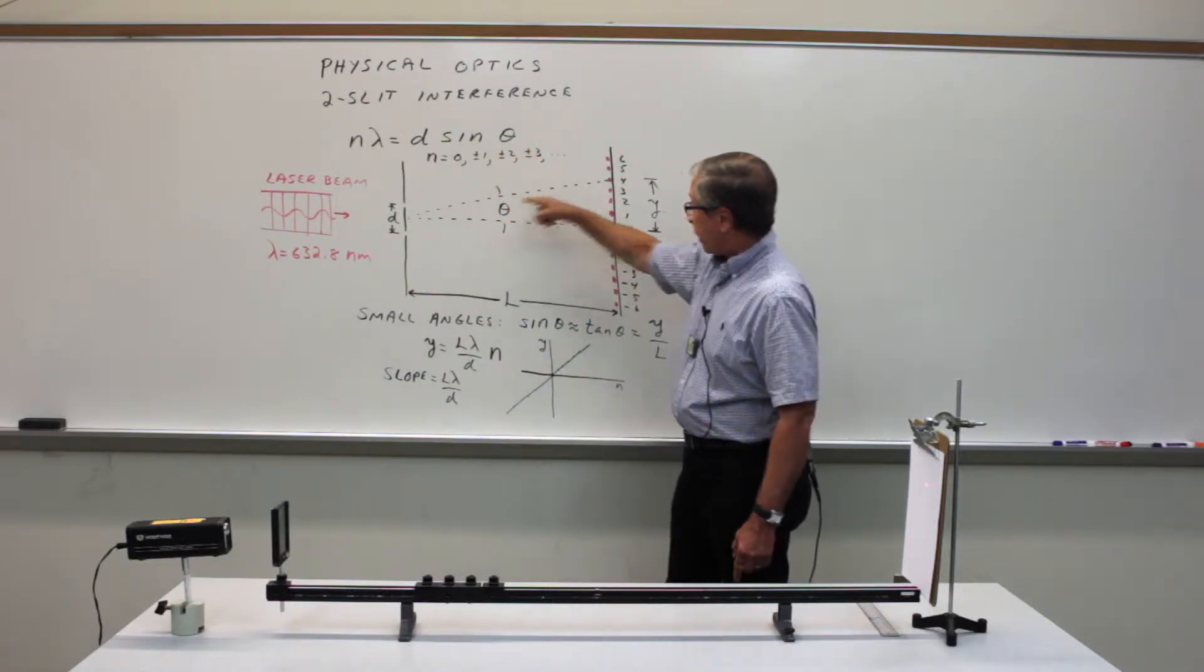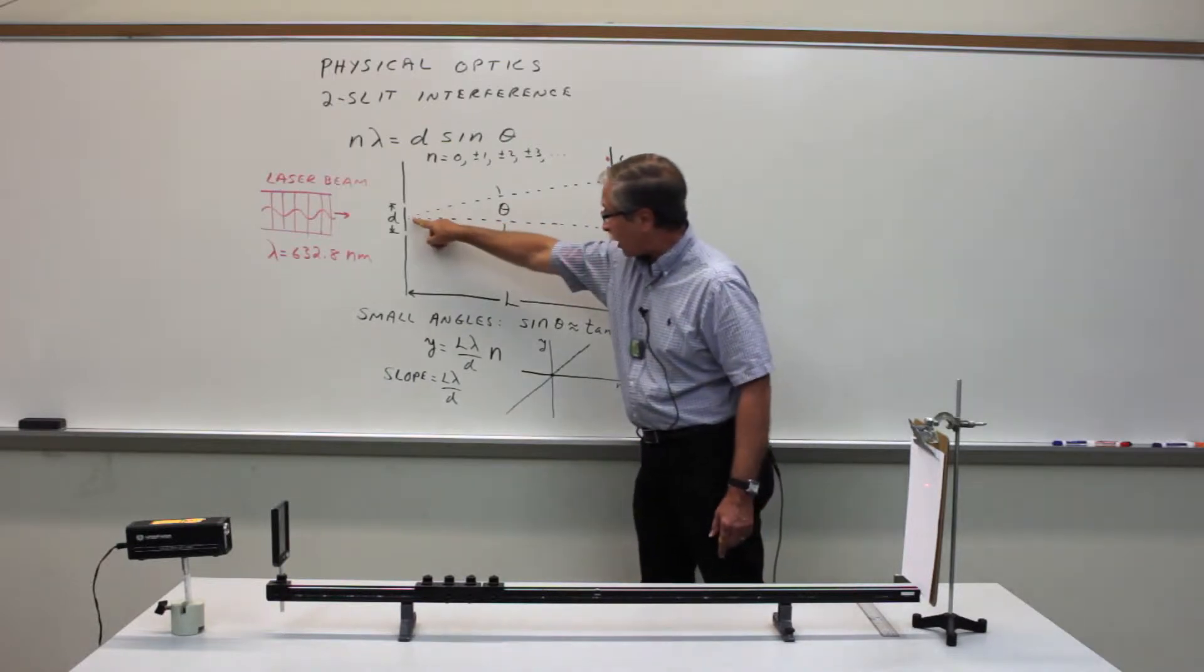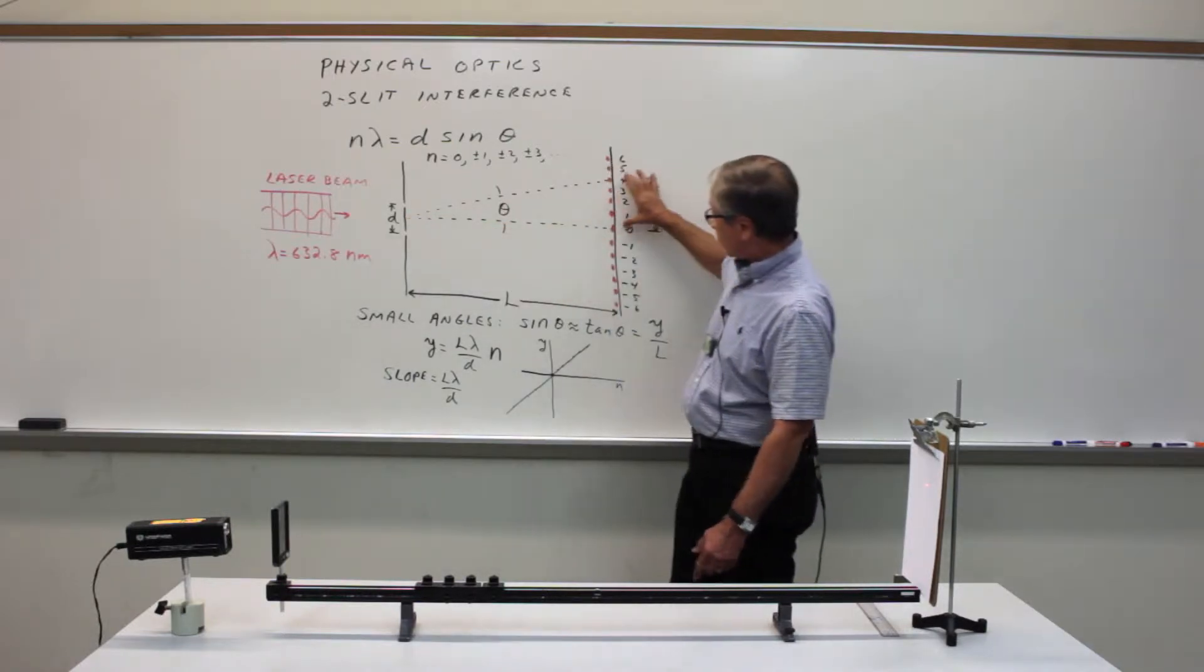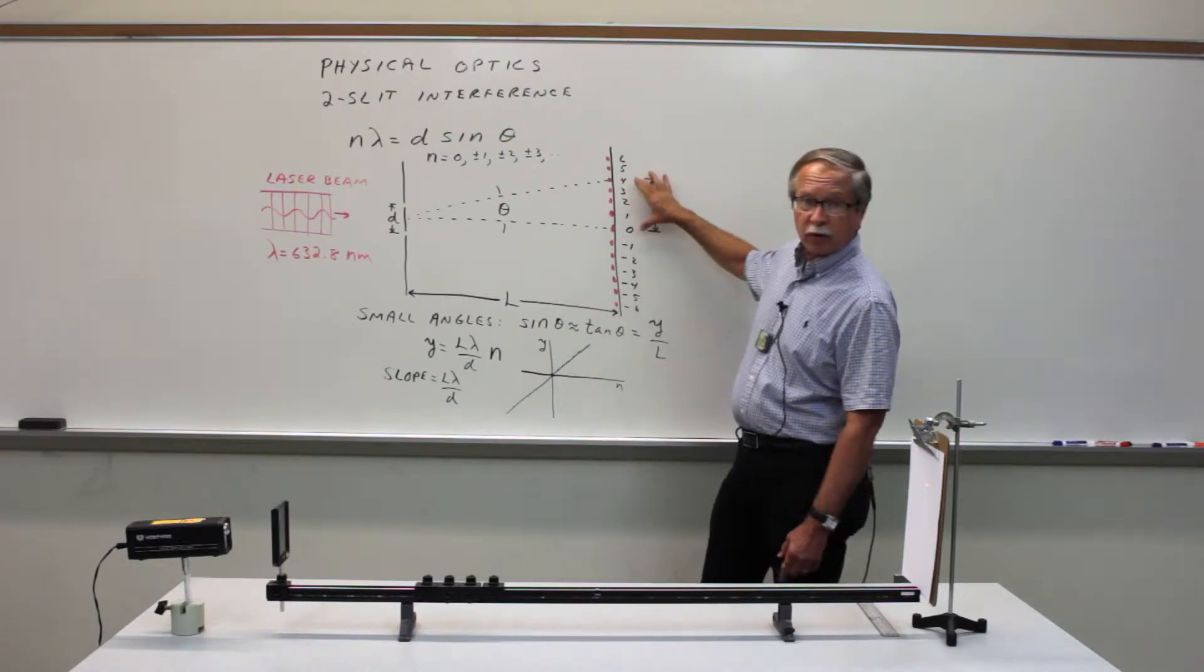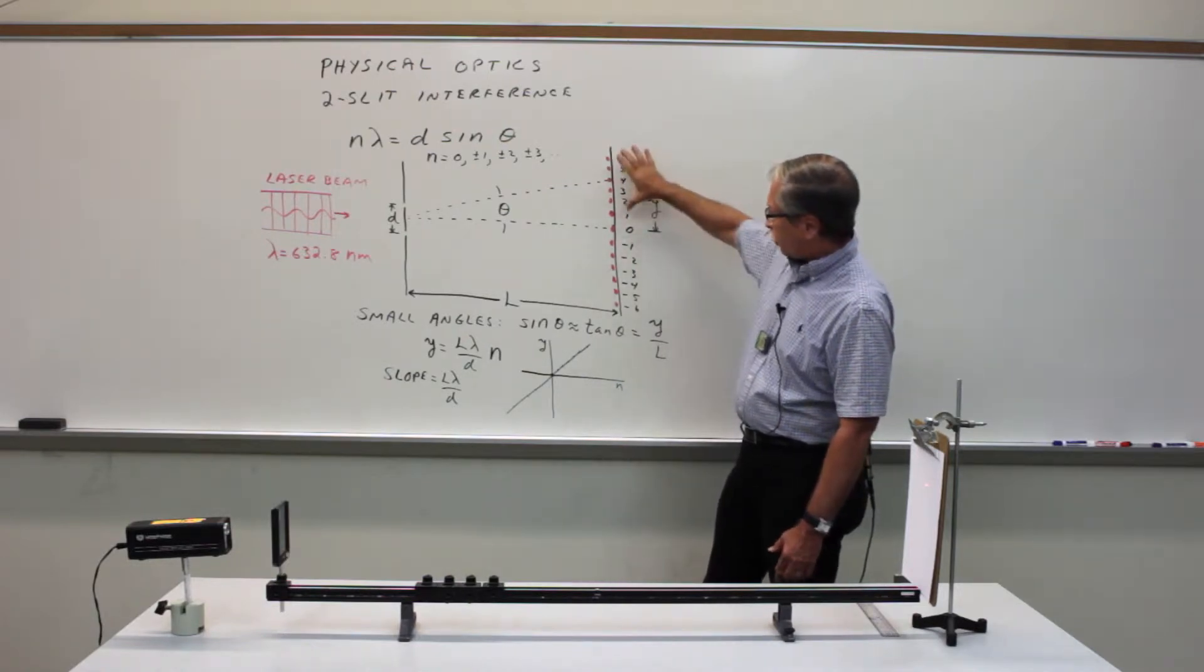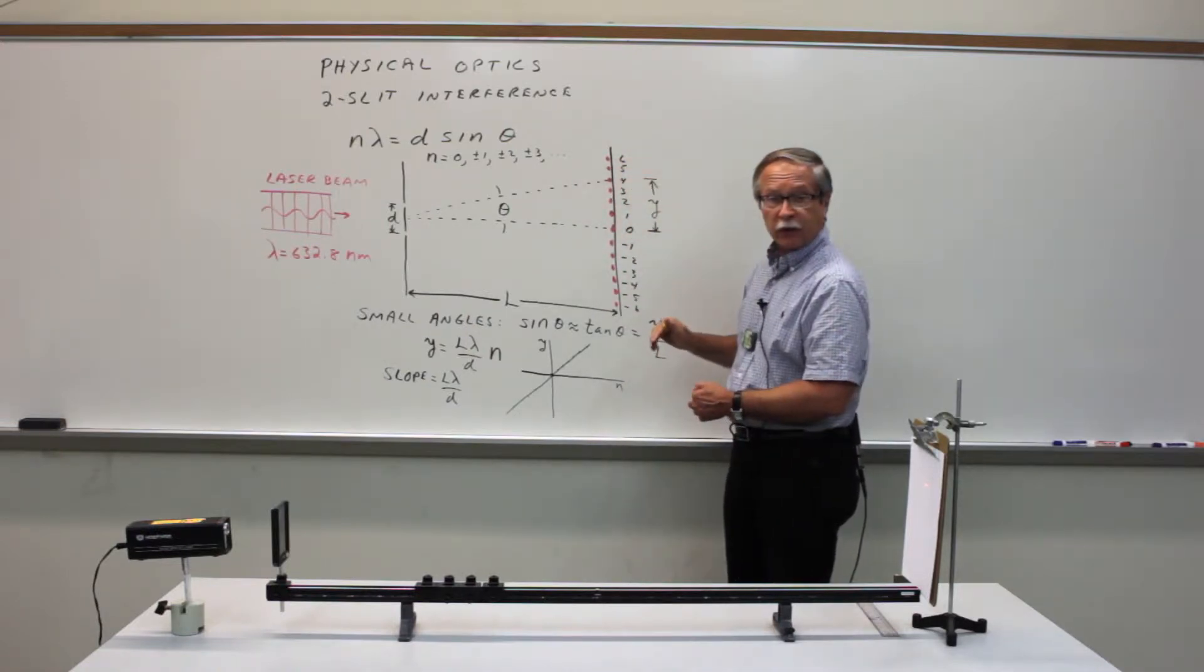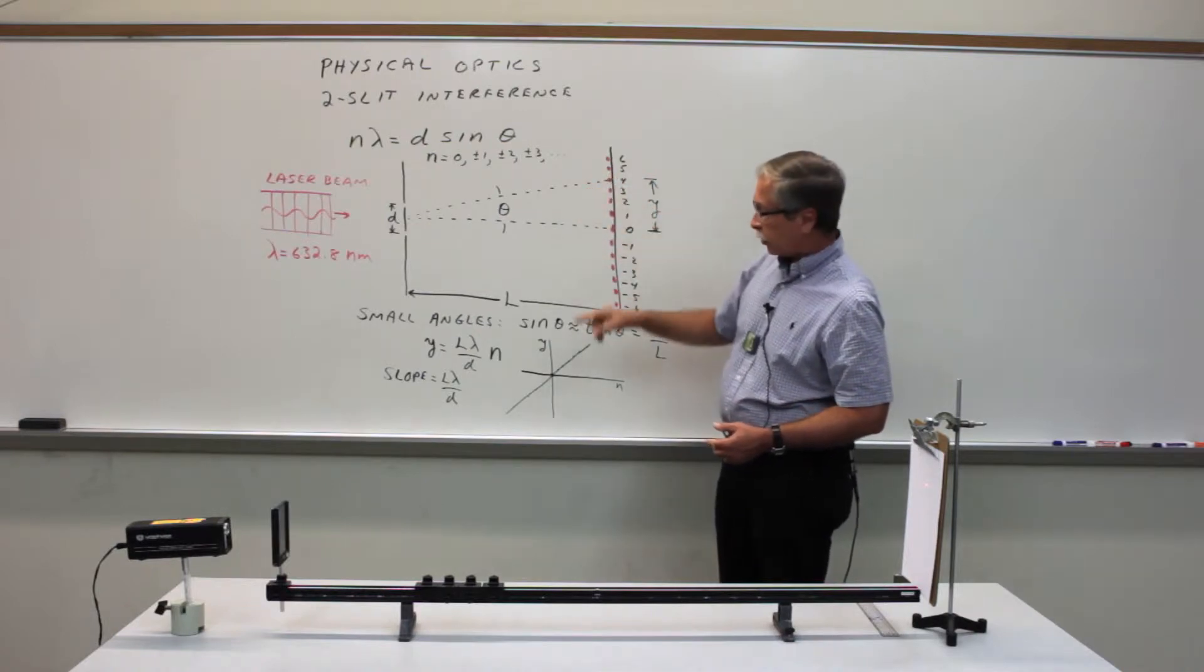Theta is the angle at which the constructive interference occurs. So we measure the angle from the slit to the position of the bright spots on the screen. Now, if we're talking about an interference pattern where the constructive interference occurs at rather small angles,